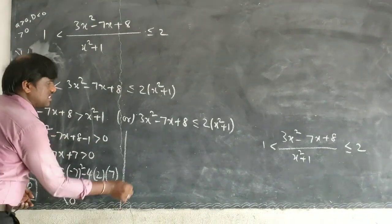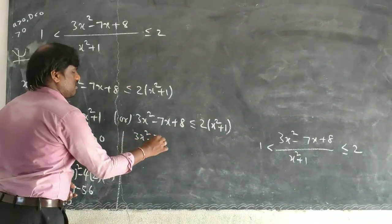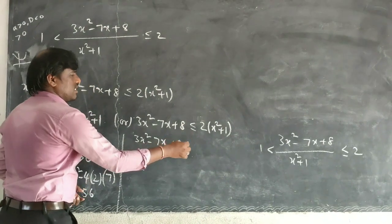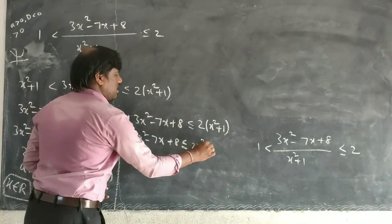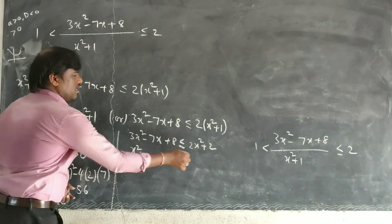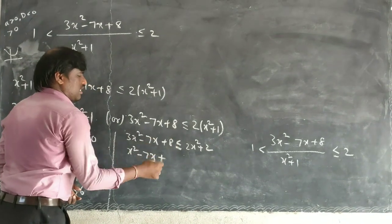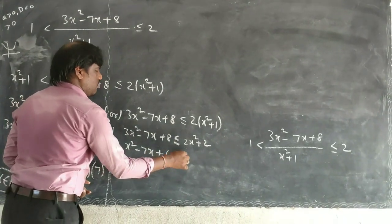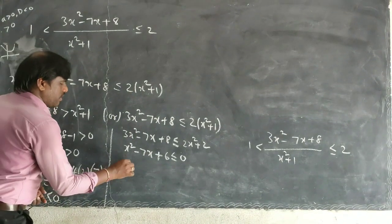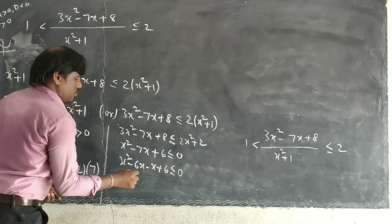Now let us go to the second case. Here 3x squared minus 7x plus 8 is less than or equal to 2x squared plus 1. If I send terms to one side: x squared minus 7x plus 2 minus 8, that is x squared minus 7x minus 6, which simplifies to x squared minus 6x minus x plus 6, less than or equal to 0.